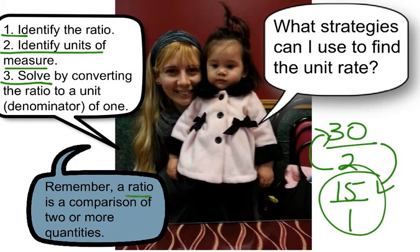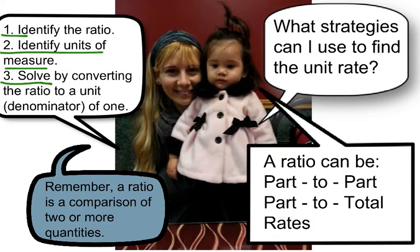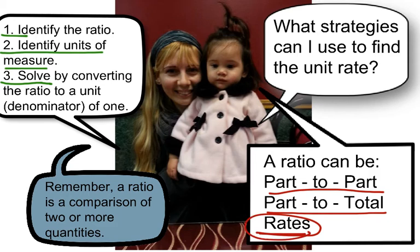Remember, a ratio is a comparison of two or more quantities. Make sure you pause and write down all three steps so you can check them off as you go. A ratio can be one of three things: part-to-part, part-to-total, or rates. In this tutorial, we're really going to focus on rates.